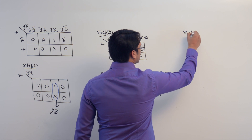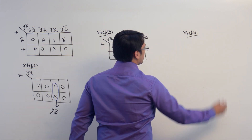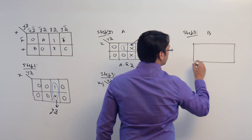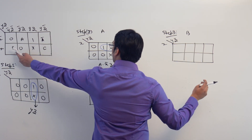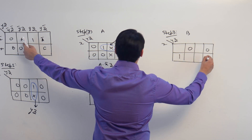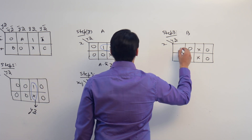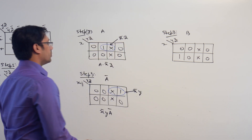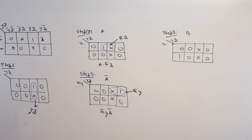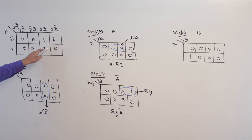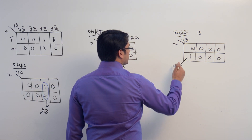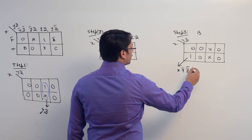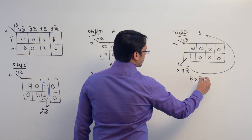Now take the next variable, b. We keep b as one and all the other variables as zero, then make the ones don't care. In axes x, yz, the cells become: zero, don't care, don't care, and zero. We cannot make a larger subcube here, so this single cell is representing x, y complement, z complement. Combined with b, the expression becomes b x y complement z complement.